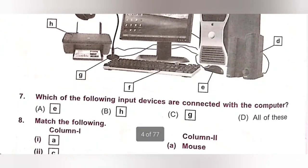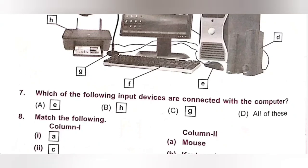Seventh one. Which of the following input devices are connected with the computer? A, E. B, H. C, G. D. All of these. So, all of the peripheral devices must be connected with the computer. Option D, all of these, is the correct answer.